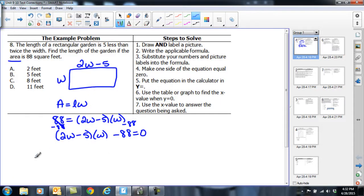So I know that according to this, W is equal to eight, because for me W and X were the same thing. But now I've got to go back to the problem and see what it asked. It says to find the length of the garden. Well, the length is not W. The length is 2W minus 5, so I've got to plug this in.